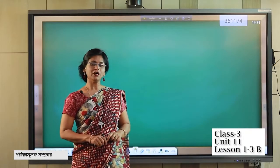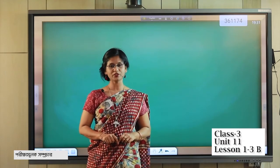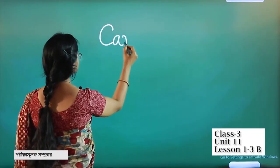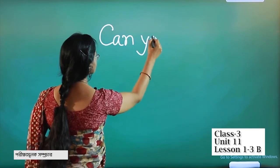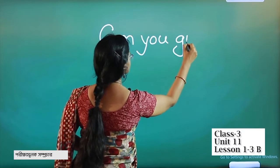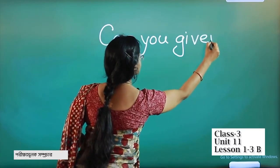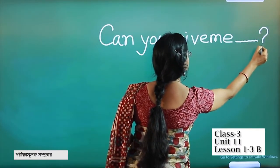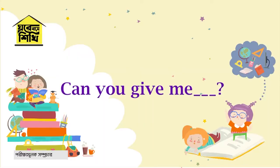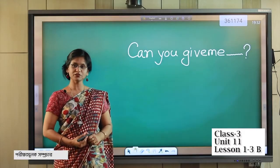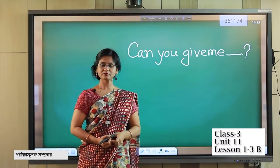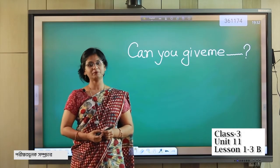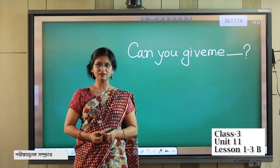In our previous class, we learned about how to request and how to respond. For a request, we use the structure: 'Can you give me?' On the blank, you can use a pen, a pencil, a paper, a book — anything.